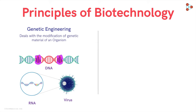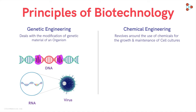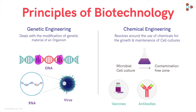Moving ahead with the next principle, which is chemical engineering. The name itself suggests that the principle revolves around the use of chemicals for the growth and the maintenance of cell cultures. The desired eukaryotic or microbial cell cultures are stored in a contamination-free zone. Further, these cell cultures are used for the production of vaccines, antibodies, enzymes, and various other useful products.